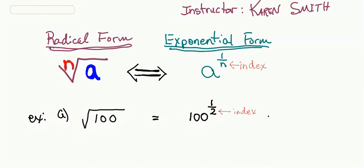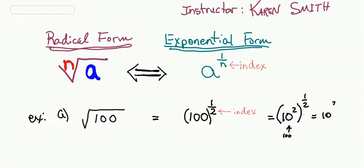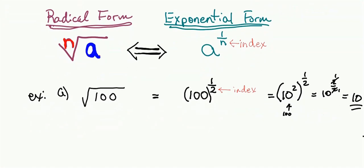Let me show you a trick. We could also write this to simplify it using exponent properties. We know that 100 is 10 squared, so we have 10 squared to the one half power. Raising a power to a power, we multiply. So this would be 10 to the 2 times one half, which is 2 over 2, or 1 — so 10 to the 1, which is 10. So yes, the square root of 100 equals 10. You can use your exponent properties just like in the last video.